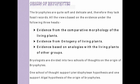Number one: evidence from the comparative morphology of the living plants. Comparative morphology is the study of structure of organisms. Second: evidence from ontogeny of living plants. Ontogeny means the developmental history of an organism. Third: analogies with the living plants of other groups. Analogies is the process of transferring information from one organism to another.